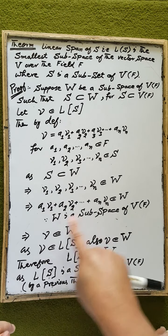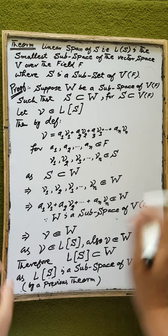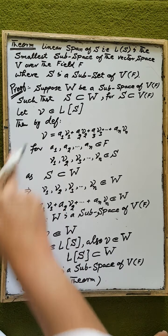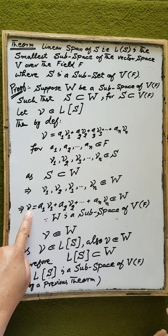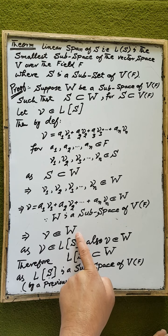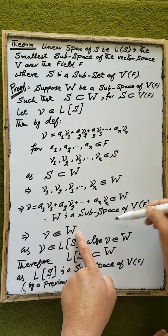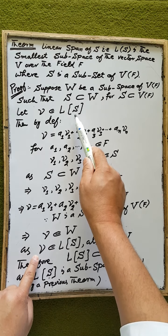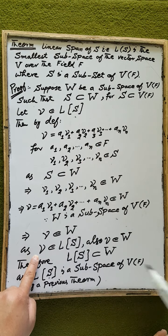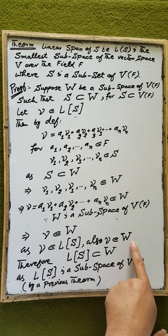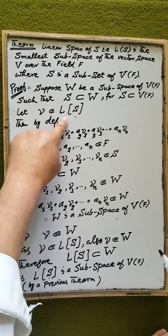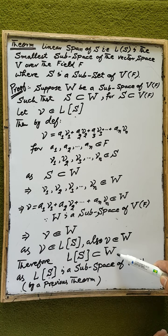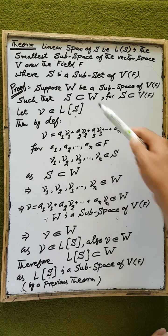The linear combination A1·V1 + A2·V2 + ... + An·Vn gives an element V, and by this condition that element V is an element of the subspace W of the vector space V over the field F. Since V is an element spanned by Span(S) and also an element of the subspace W, therefore the linear spanning set spanned by S is a subset of the subspace W of V over F.